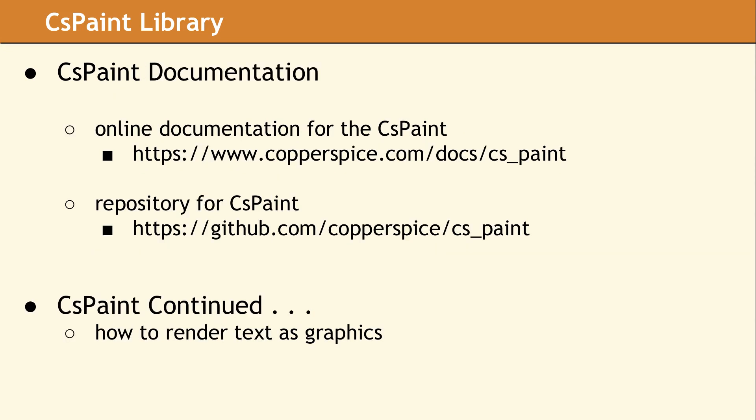As part of the documentation for cspaint, we have general information about Vulkan terminology and rendering graphics, as well as class-level documentation for the cspaint API. The first link will direct you to the online documentation, and the second link is to the full source code of cspaint, which is hosted on GitHub. In our next video, we will continue this discussion and show the details of rendering text as graphics on the GPU.